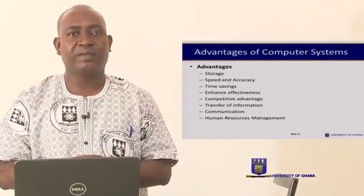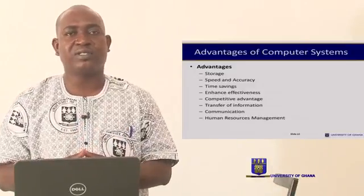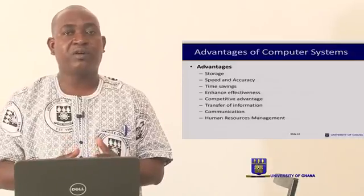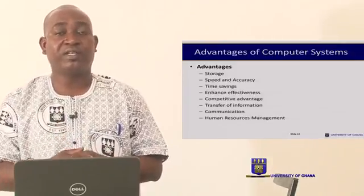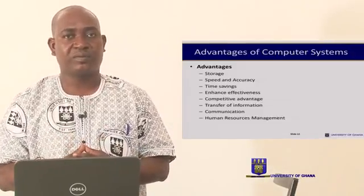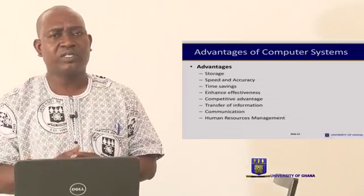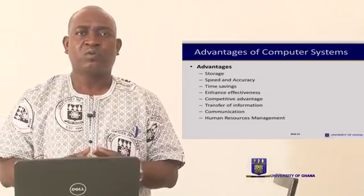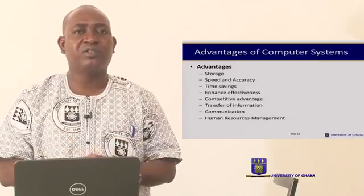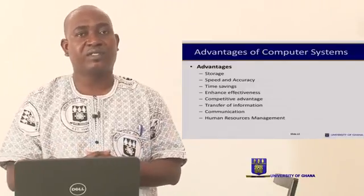The speed and accuracy of a computer system can never be compared to human speed and accuracy. Once technology is there, the way we do things and discharge our duties is faster and more accurate. For human beings, there will be boredom and stress, and at the end of the day, we may not give accurate results. It also saves time — what a click of a mouse can do would take a human being so much longer, and that alone can save you time.